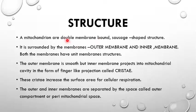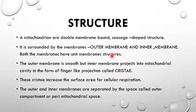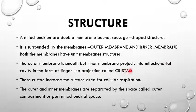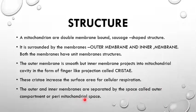Mitochondria are double membrane, sausage-shaped structures surrounded by an outer membrane and an inner membrane. Both membranes have unit membrane structure — they are made up of phospholipids and proteins. The outer membrane is smooth, but the inner membrane projects into the mitochondrial cavity as finger-like projections called cristae. The outer and inner membranes are separated by a space called the outer compartment or perimitochondrial space.